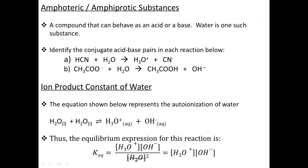In our last video tutorial we looked at the Bronsted-Lowry definition of acids and bases. Could you please press the pause button and then try to identify which of these compounds is considered to be the acid, the base, the conjugate acid, and the conjugate base? Once you're done, press play and we will go over the answers.